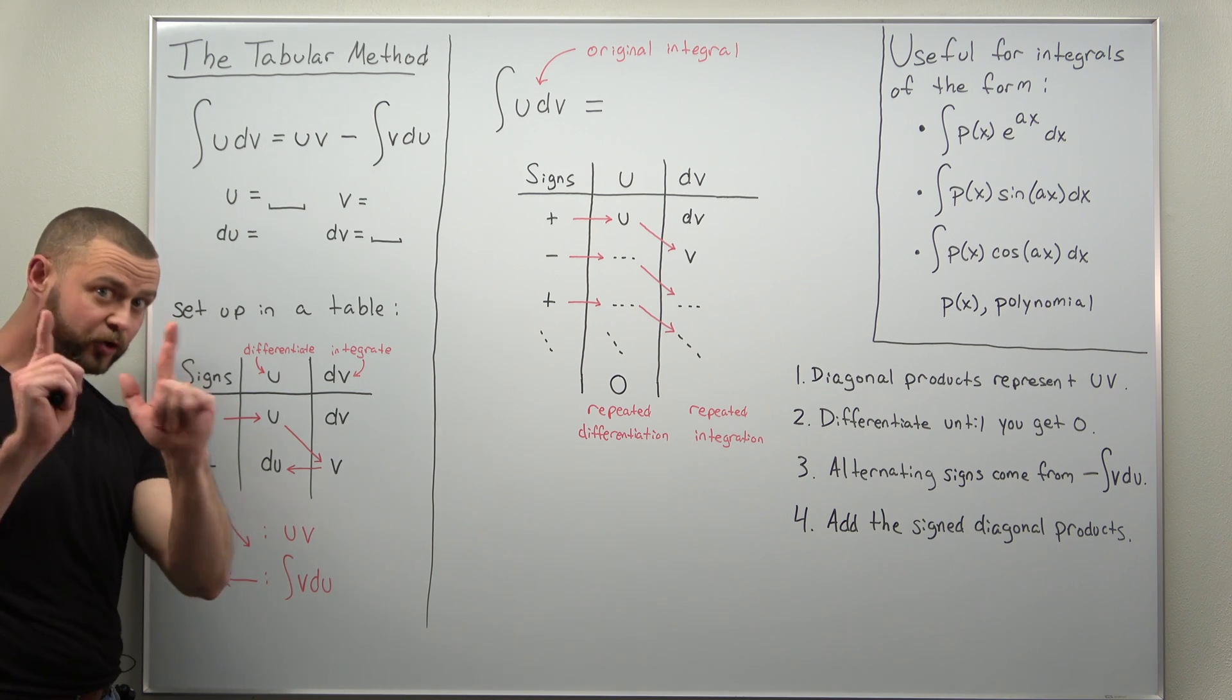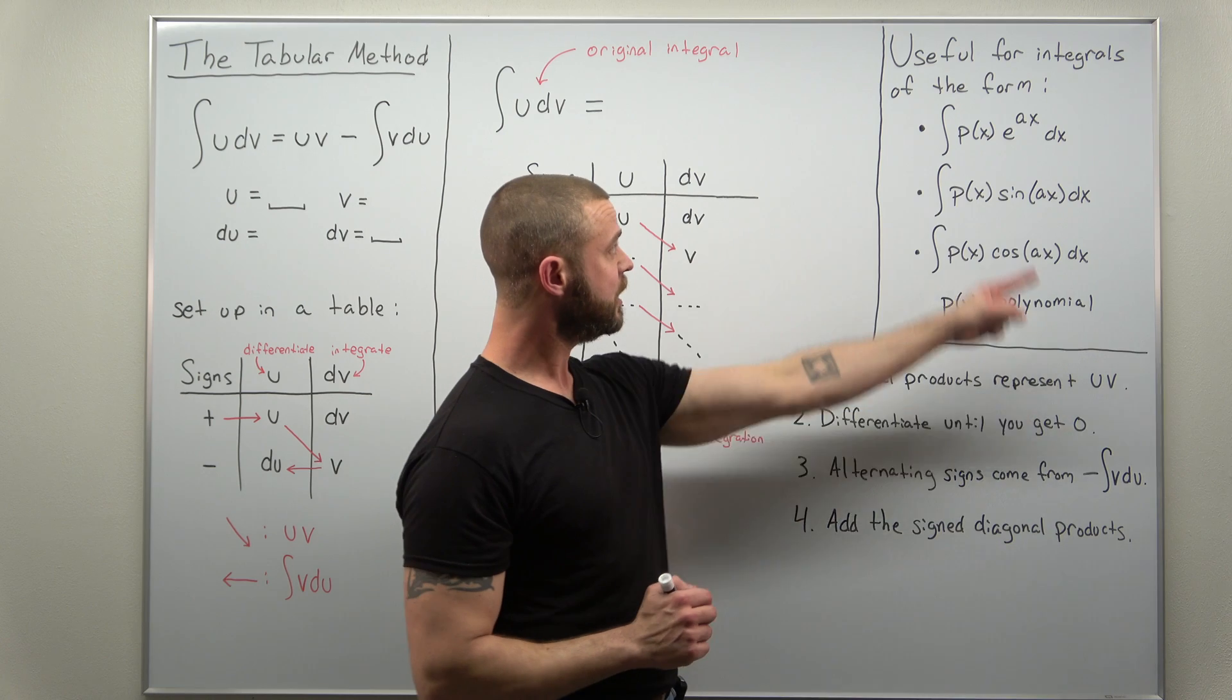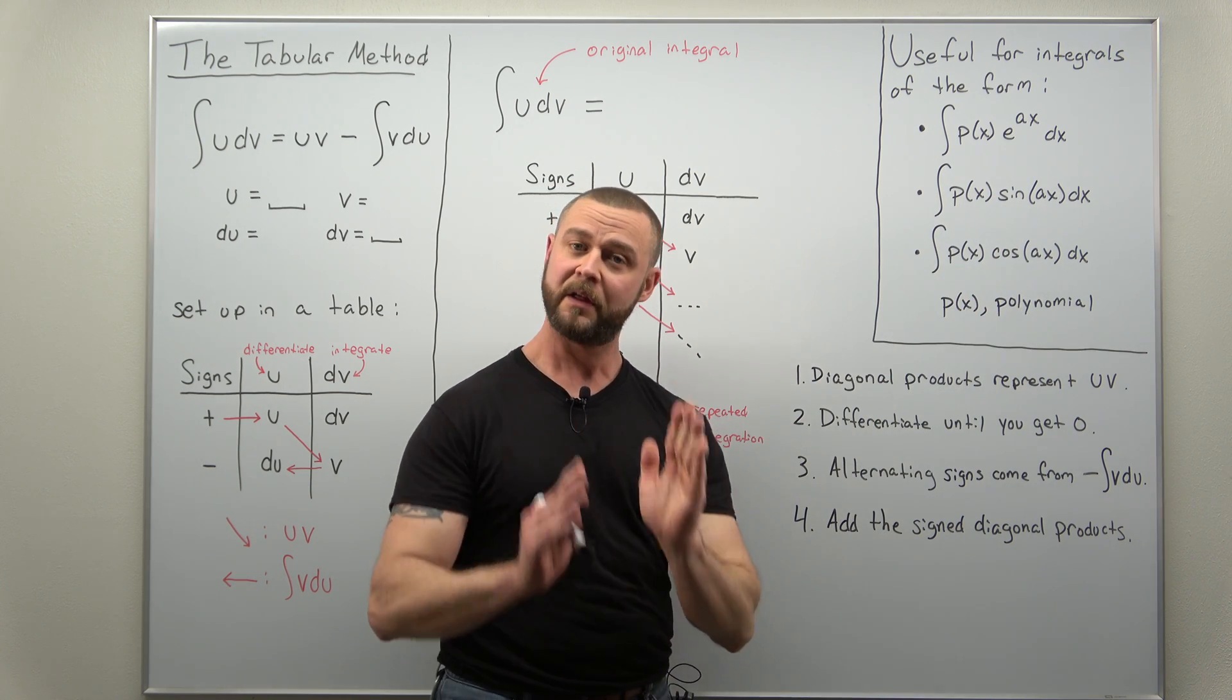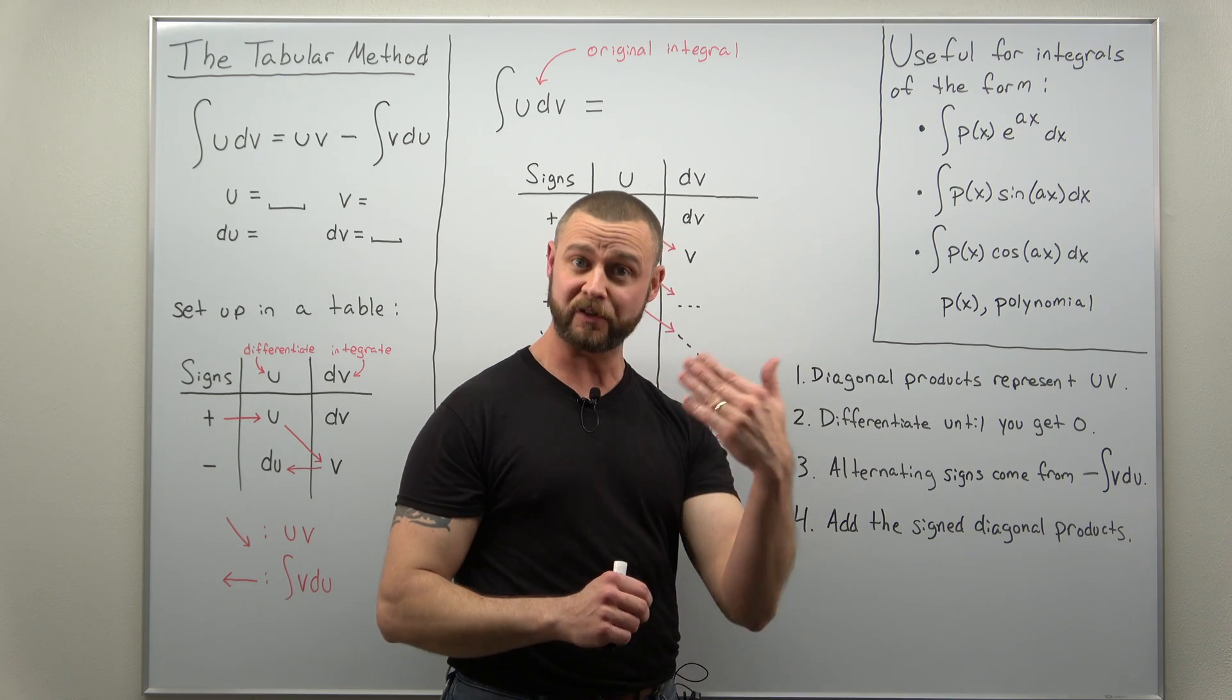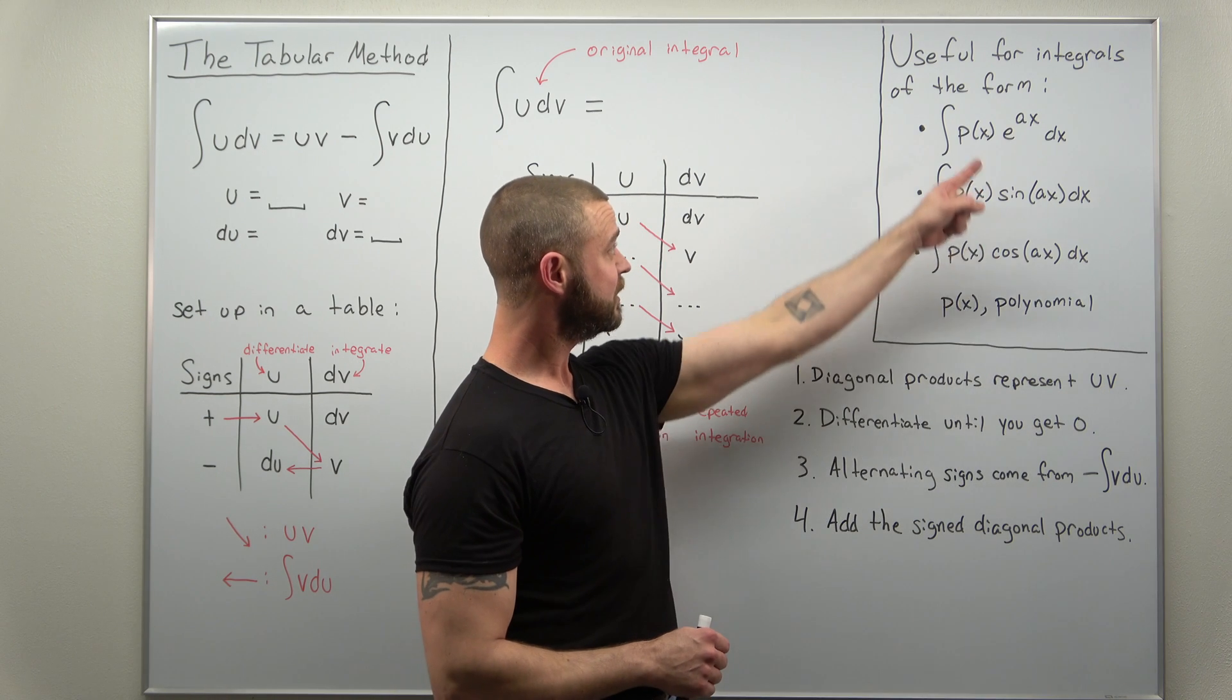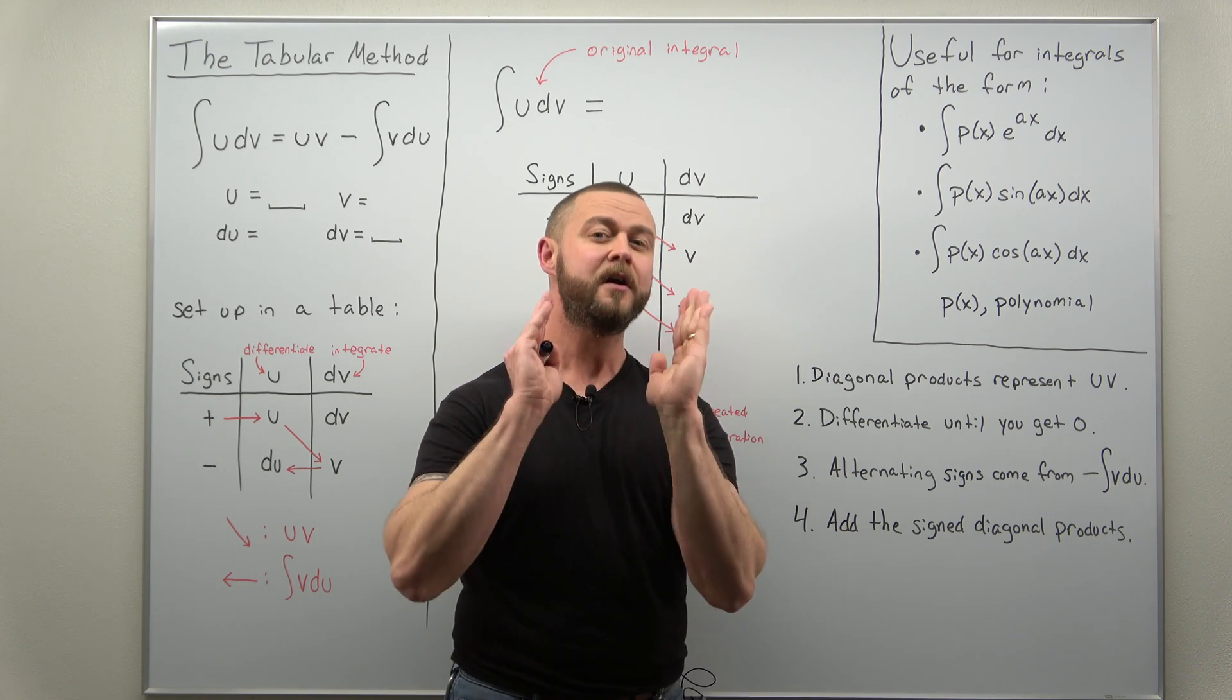The integrals that this shortcut, called the tabular method, are actually shortcuts for are usually three standard ones where we have a polynomial, what we're calling p of x, being multiplied by an exponential, sine, or cosine. Basically, the degree of the polynomial tells you how many times you're going to integrate by parts. So if you have a third-degree polynomial, you have to integrate by parts three times, and that's just really tedious. The tabular method, you'll be able to integrate and crush that in seconds.